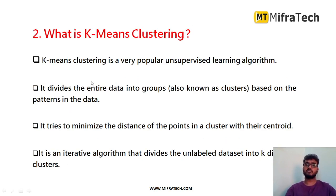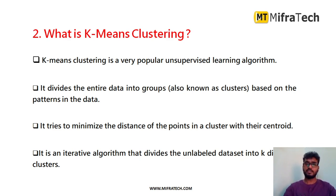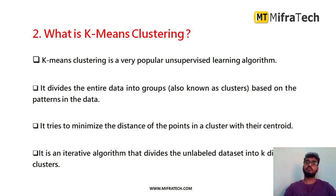K-means clustering is an important unsupervised machine learning algorithm mainly used for clustering. It divides the entire data into groups or clusters based on similarity patterns observed in the dataset during training. It tries to minimize the distance of the points in a cluster from the centroid. After data is plotted, we randomly select some centroids, calculate the distance, and minimize it iteratively. K-means is an iterative algorithm that repeatedly refines clusters for better accuracy.